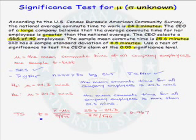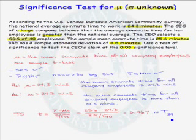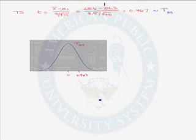Our test statistic follows a t-distribution with n minus 1 degrees of freedom. In this problem, that is a t-distribution with 39 degrees of freedom. We are now ready to draw the sampling distribution for our test statistic, which is a t-distribution with 39 degrees of freedom, and we have labeled our test statistic of 0.967.